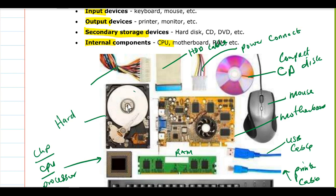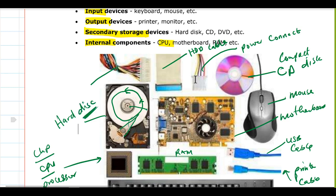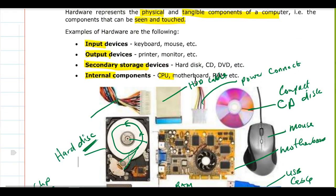This magnetic piece inside keeps rotating, but you cannot see it rotating because it is inside. There is also an arm — you can actually see this arm moving between the center towards the end. These are the hardware — the physical and tangible components of a computer.